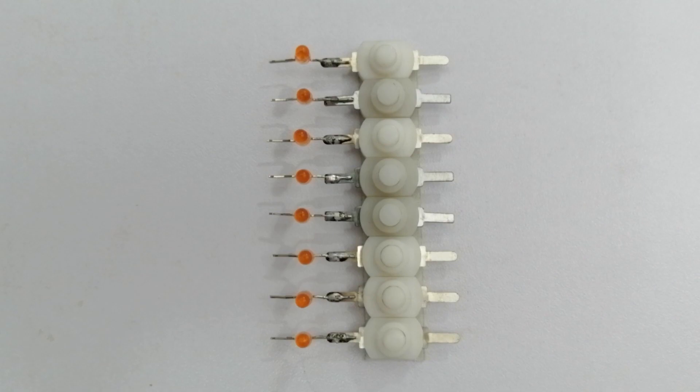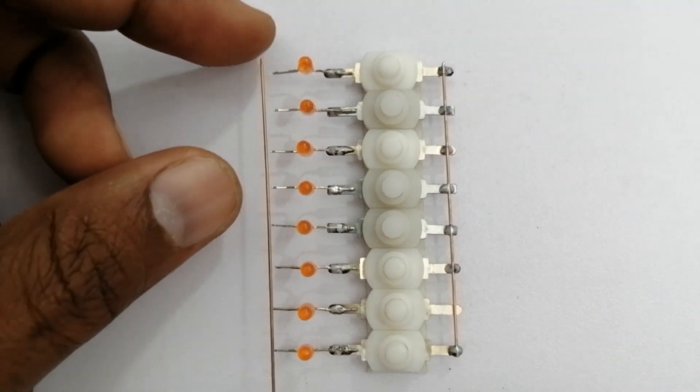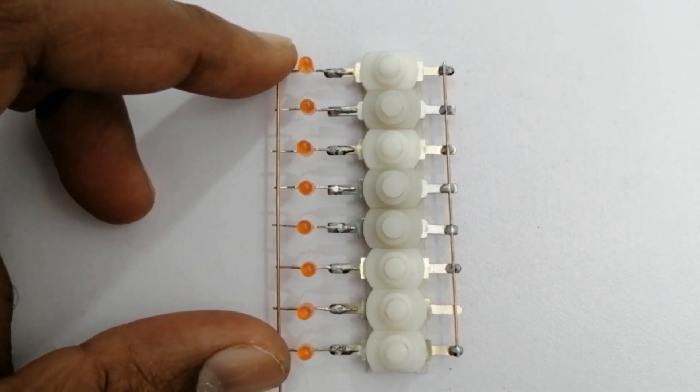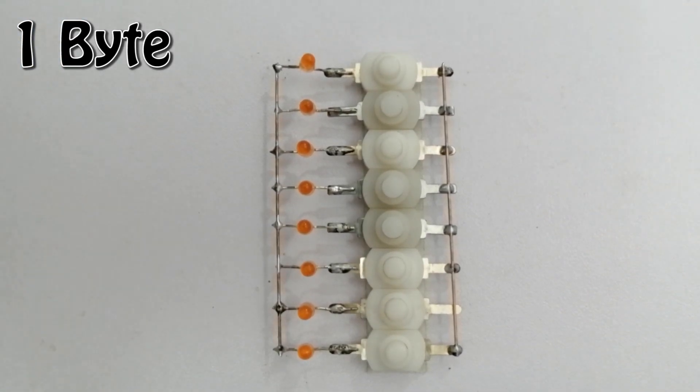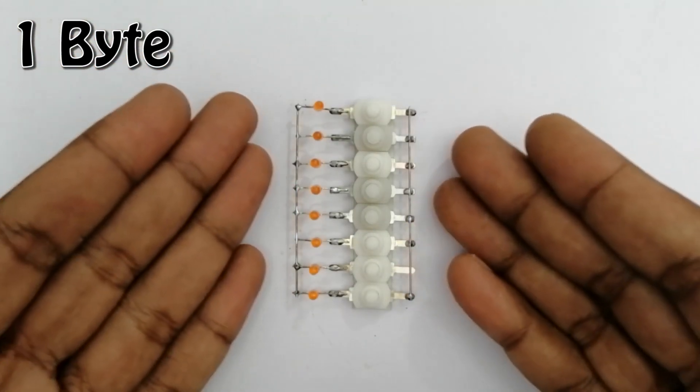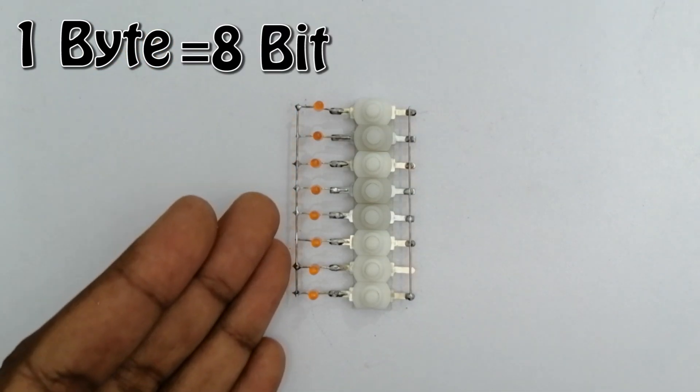Now we solder them to the right and on the other side we solder from the left. We connect them to one unit. Friends, we have created 1 byte memory with the help of 8 switches and LEDs. You know that there are 8 bits in 1 byte.